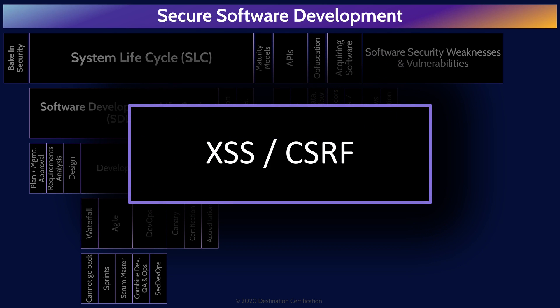Cross-site scripting attacks allow an attacker to inject client-side scripts into web pages viewed by other users, causing the malicious code from the attacker to be executed by the victim's browser. There are two major flavors of cross-site scripting: stored (which is persistent) and reflected (which is more common). All flavors of cross-site scripting target the victim's browser. Cross-site request forgery attacks, on the other hand, target a web application. This is accomplished by tricking a valid and authenticated user into sending commands to a web application that trusts the user, causing it to execute commands from an attacker that it shouldn't be executing.